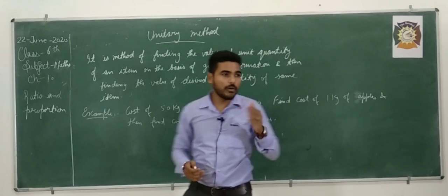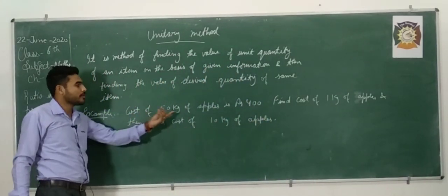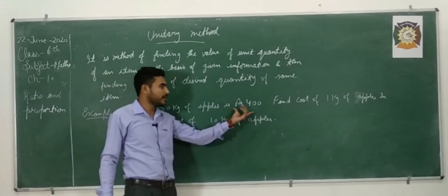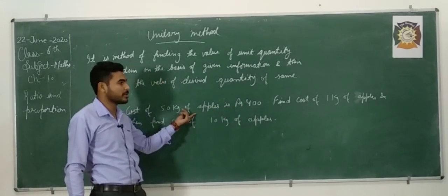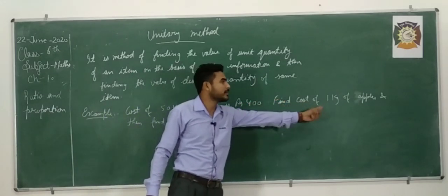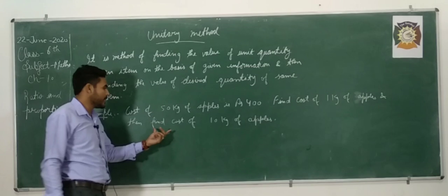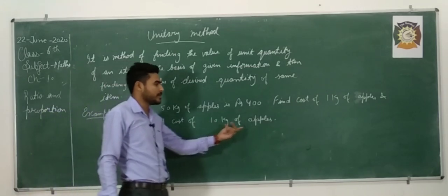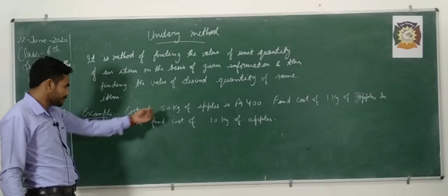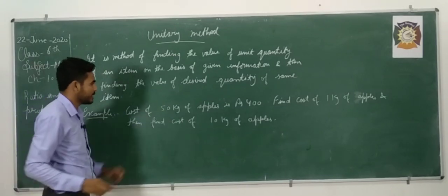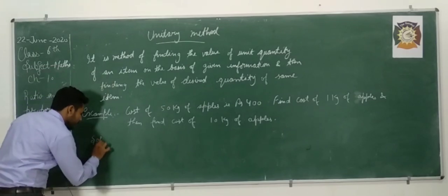Now, we will go to one example. The cost of 50 kg of apples is rupees 400, and it is the given information. And we have to find the cost of 1 kg of apple and after that we have to find the cost of 10 kg of apples. Now, look at this. How can we do this example? Write it here. Solution.